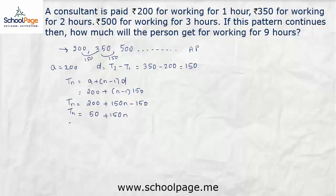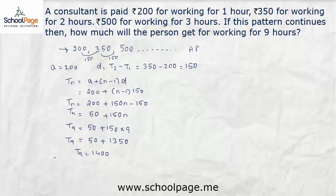To find the pay for 9 hours of work, we find t9: t9 equals 50 plus 150 into 9, which is 50 plus 1350, equals 1400. So a person gets rupees 1400 for 9 hours of work.